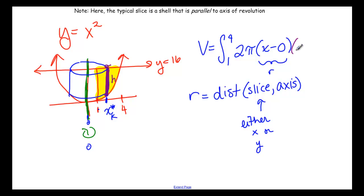So here we would have 16 as our top function minus x squared as our bottom function. So that's 2πrh and then dx at the end. And that's how you find volume using shells.